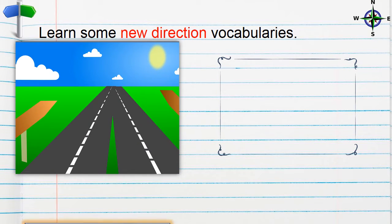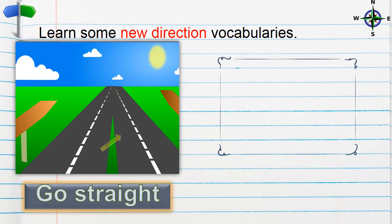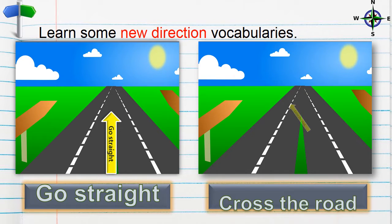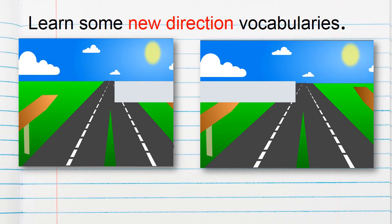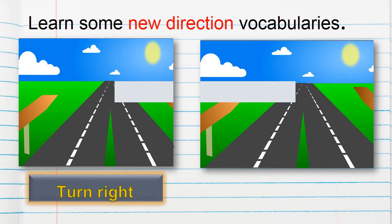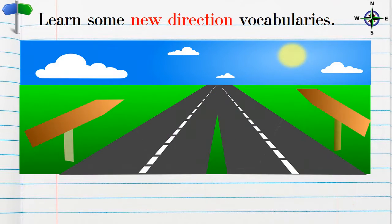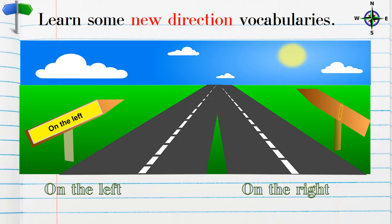Go straight. You can see this picture. Cross the route. Turn right. Turn left. On the left.